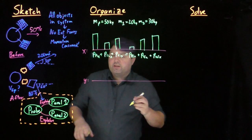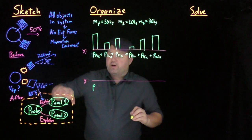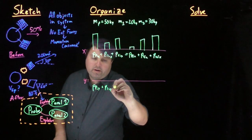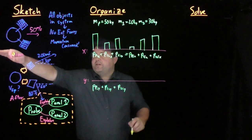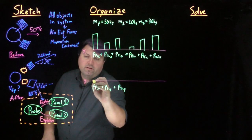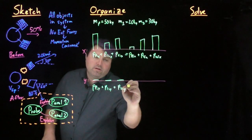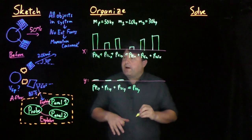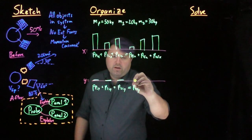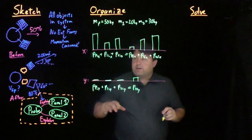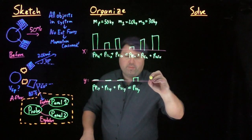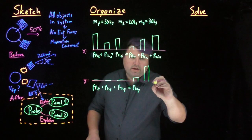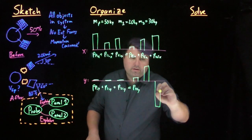In the y direction, somewhat interestingly, the y momentum at the start — p_probe_initial_y, p_panel1_initial_y, p_panel2_initial_y — all of these are zero because it's traveling just in the x direction. We don't yet know what the final momentum in the y will be, but maybe we assume it's positive. And then we have a large amount of positive for our panel one, and some amount of negative for our panel two.